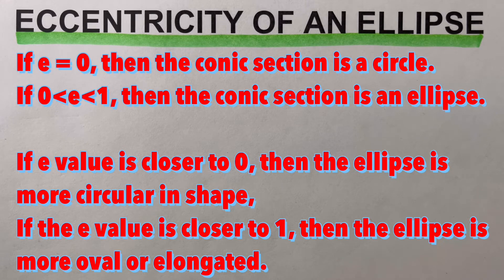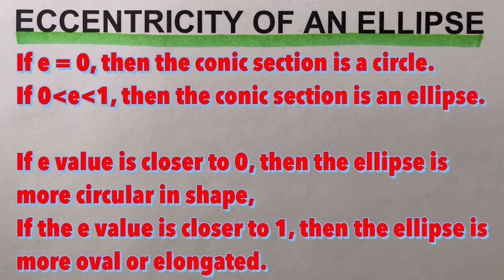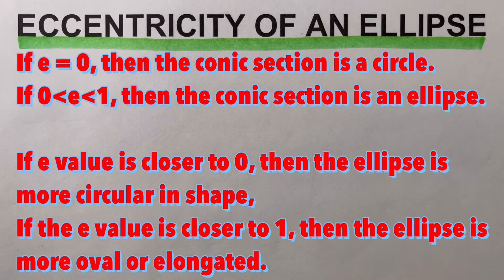We also remember that if the e value is closer to zero, then the ellipse tends to be more circular in shape. On the other hand, if the e value is closer to one, then it is more oval or elongated. Now let's look at the eccentricity formula of an ellipse.